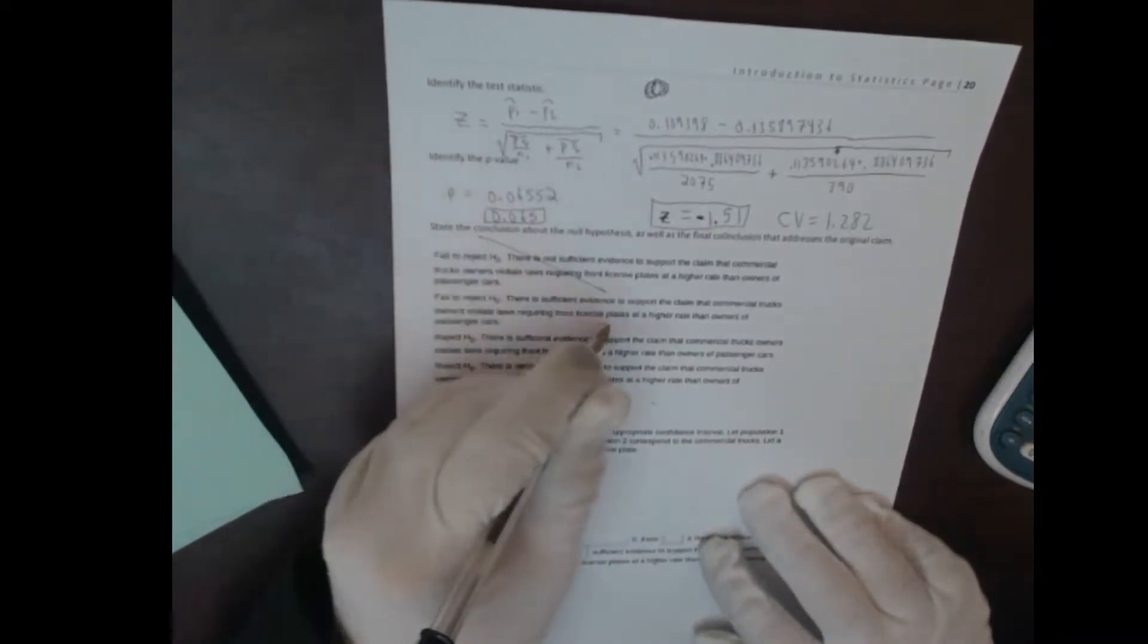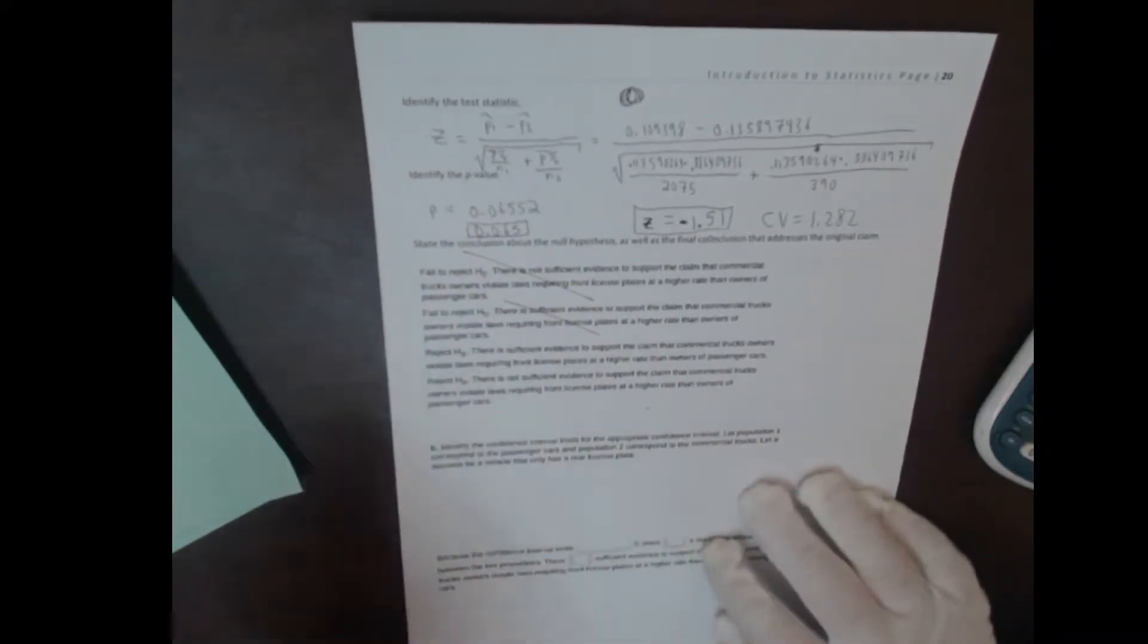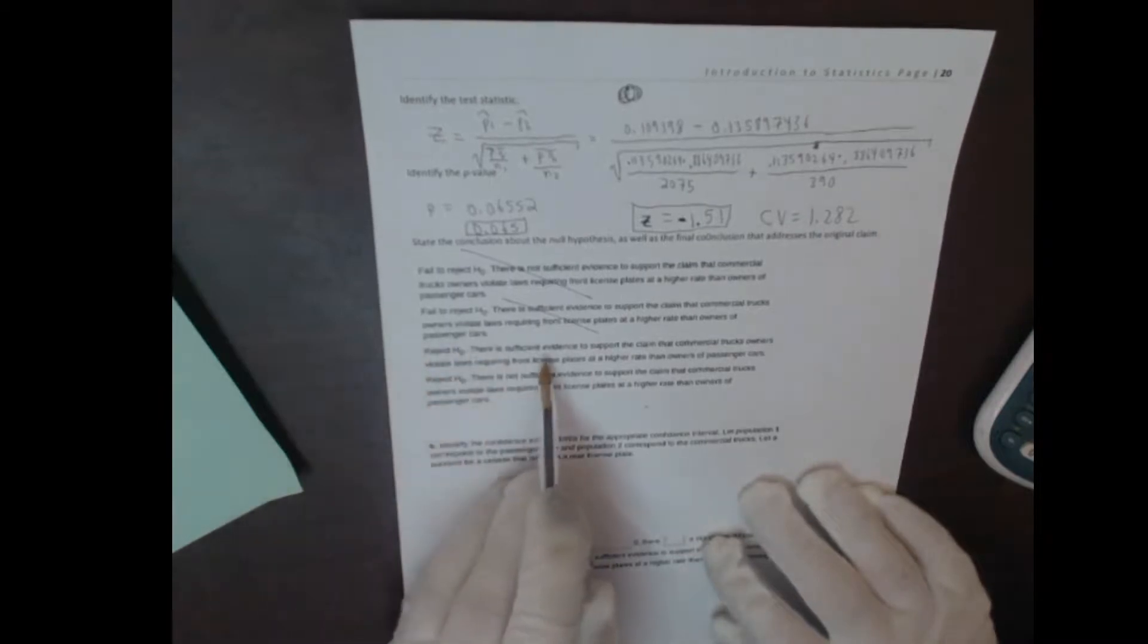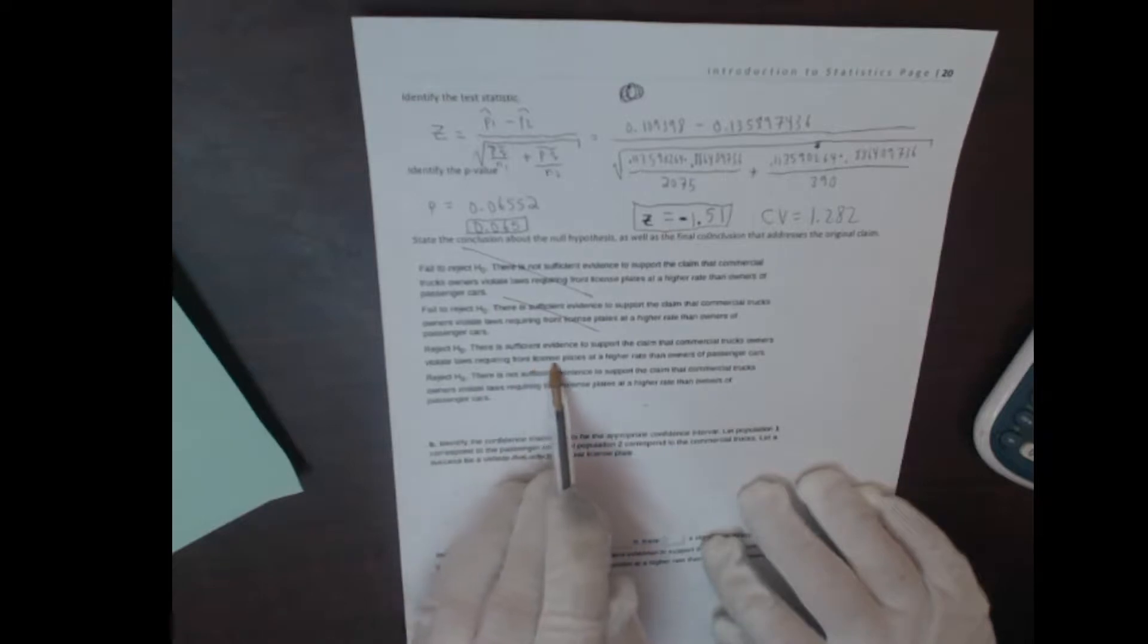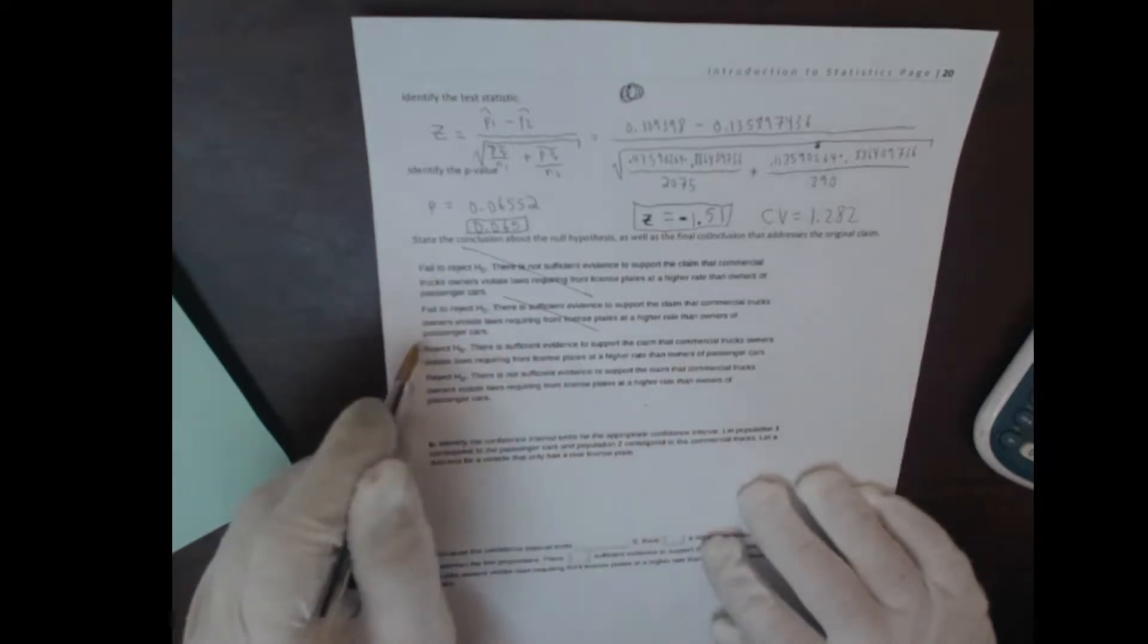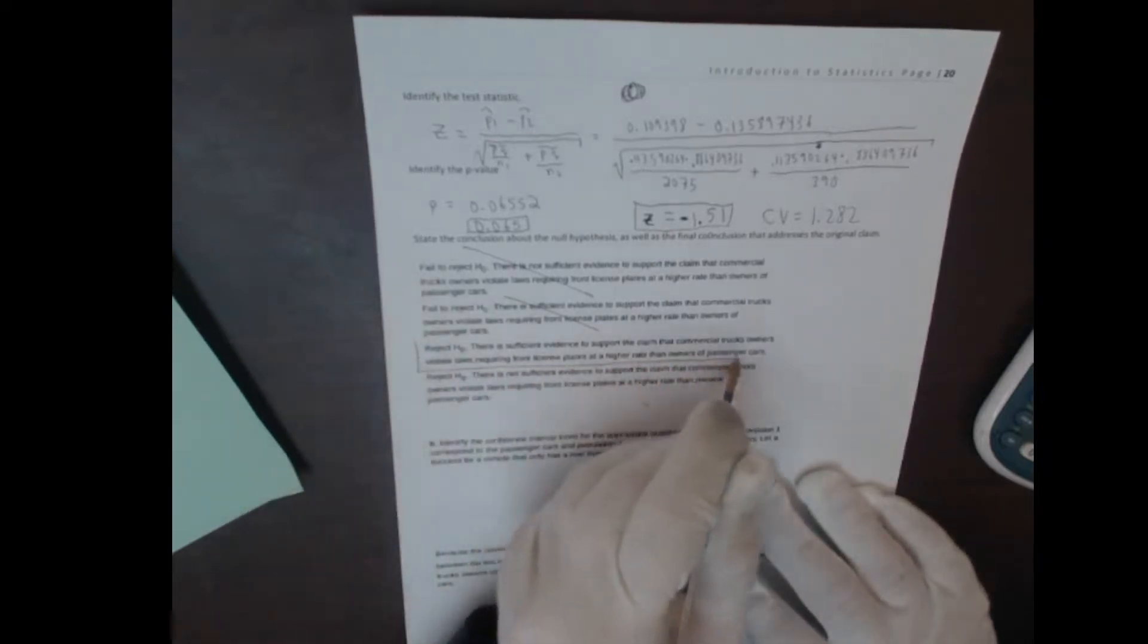So what does this mean? Well, we're definitely going to reject the null hypothesis, so we can eliminate those two answer choices. There is sufficient evidence to support the claim that commercial truck owners violate laws regarding front license plates at a higher rate. That is correct. Remember that was our alternate hypothesis.